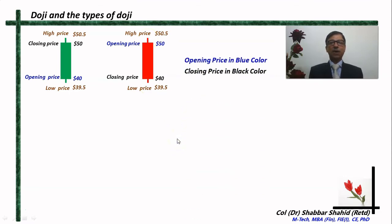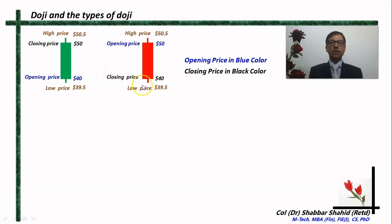For the sake of understanding, let us say the opening price is denoted by blue color and the closing price by black. This is not a universal color code — I am saying this only for this particular lesson. In fact, prices are never indicated along with the candle. The candles are only seen as pictures; the price you have to read from the y-axis of the graph.